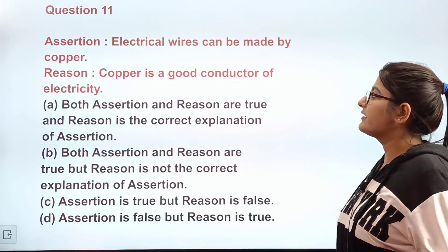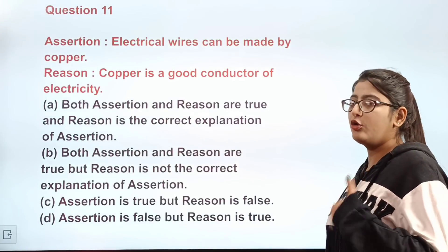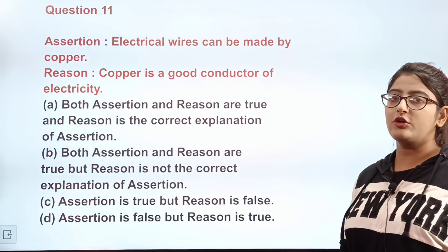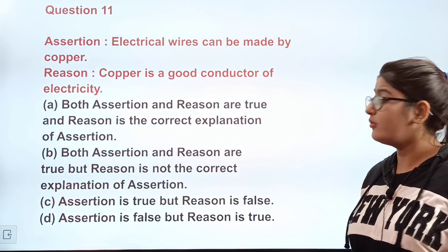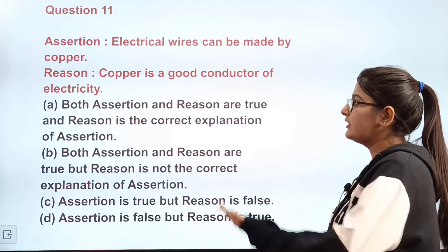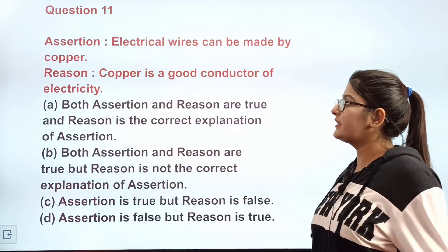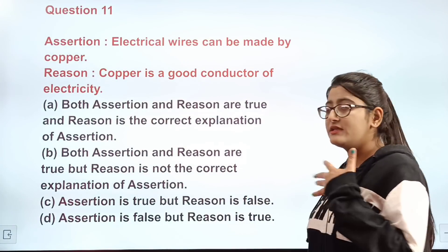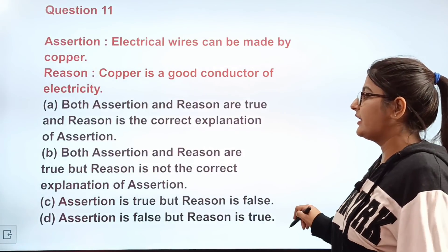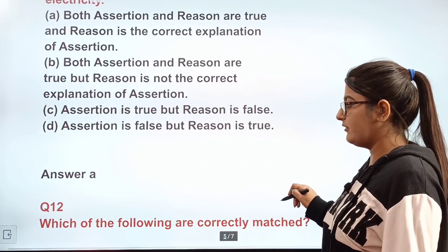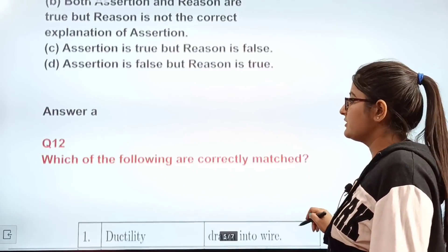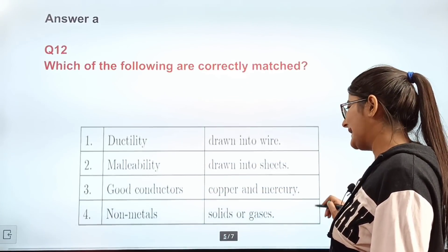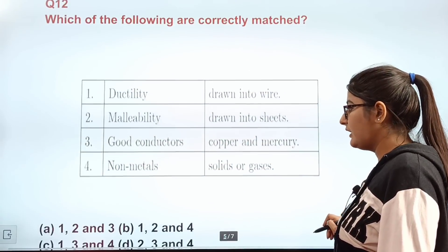Question number eleven: assertion — electrical wires can be made by copper; reason — copper is a good conductor of electricity. Both assertion and reason are true and the reason is the correct explanation of the assertion. The correct answer is A.